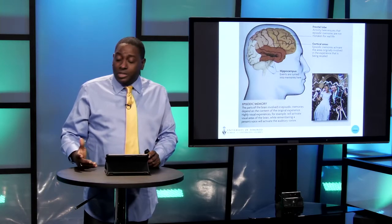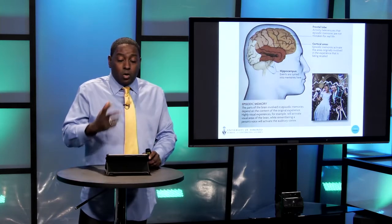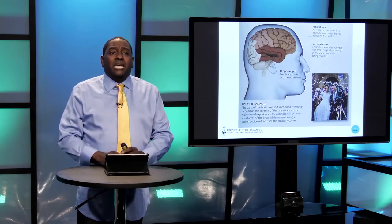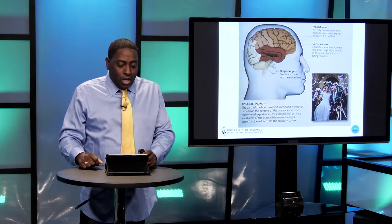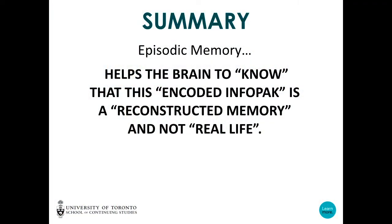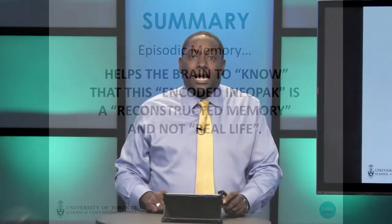There are people who do have those issues with episodic memory because it is damaged, because a frontal lobe may be damaged. You end up having problems with personality, with reality, with functioning daily because you don't know if your next step is going to be off a cliff or walking on the street. You're not sure what is real and what is not. If you damage certain centers of the brain, especially the frontal lobe, you have the risk of mistaking a memory for something that is actually happening. To summarize: episodic memory helps the brain know that this encoded infopack is a reconstructed memory and it's not real life.